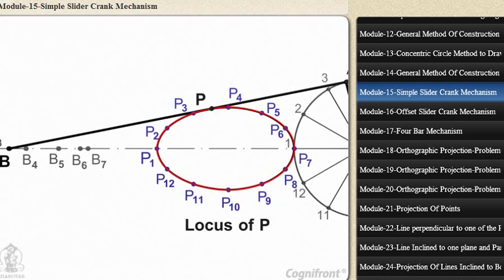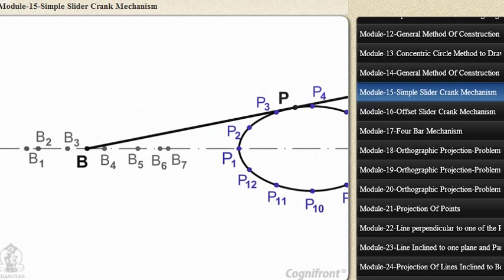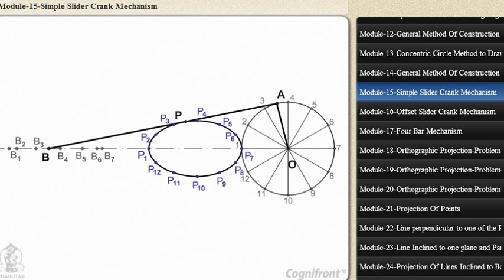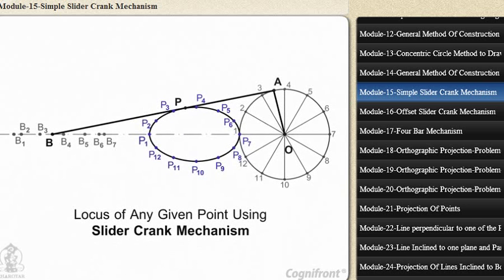Observe that the distance B1 to B7 is the travel of the slider and is equal to twice the length of the crank. This length is known as stroke length. Note that the movement of the slider is not uniform with that of the crank end A. This completes the procedure to obtain the required locus of any given point using a slider crank mechanism.